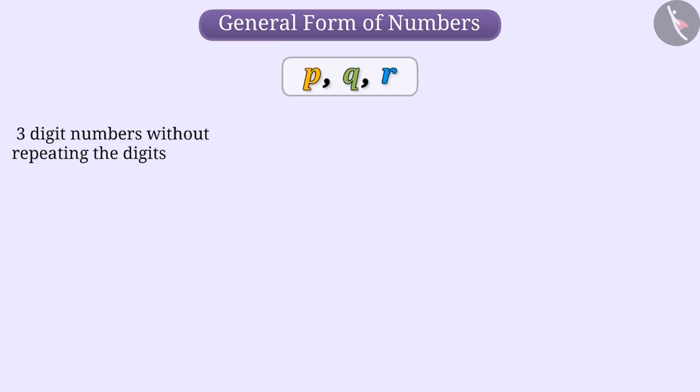Now look at these digits. Can you make a number from these digits? Think for a while. We can make 3 digit numbers using these digits without repeating. PQR, PRQ, QPR, QRP, RPQ, RQP in this way.